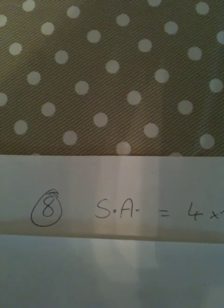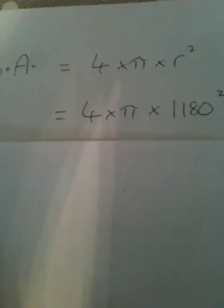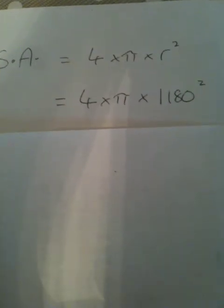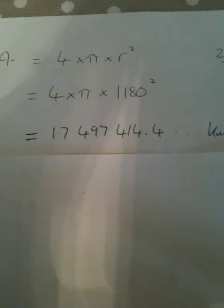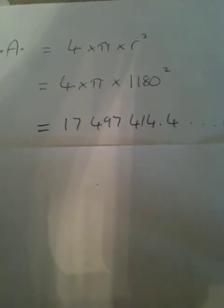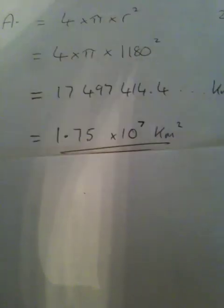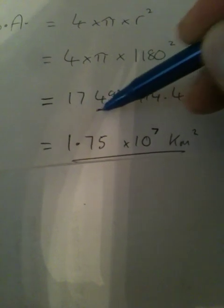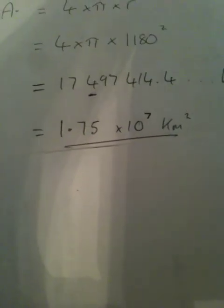Question 8: we are given the formula for the surface area of a sphere and told the diameter is 2,360. But the equation uses the radius, so we just halve the diameter to get a radius of 1,180. Then substitute in: 4 × π × 1180², which comes out as almost 17.5 million. The question asks us to round to three significant figures, so it'll be 1.75 × 10⁷ in scientific notation.